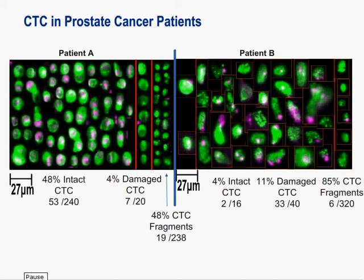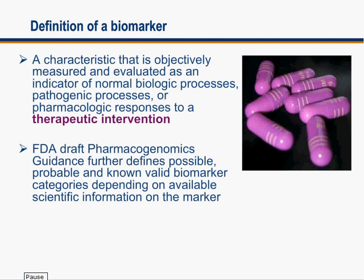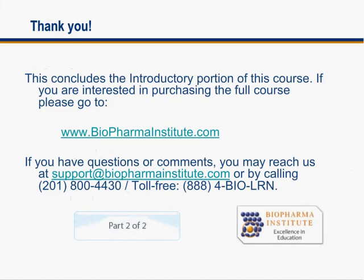I will finish this course with the definition of a biomarker: a characteristic that is objectively measured and evaluated as an indicator of normal biologic processes, pathogenic processes, or pharmacologic responses to a therapeutic intervention. This is the definition given by the FDA. I hope I have convinced you that circulating tumor cells represent a very important biomarker platform to study metastasis and hopefully find new, effective drugs against cancer. Thank you. This concludes the introductory course. If you are interested in viewing the full version, go to www.biofarminstitute.com or call 201-800-4430.